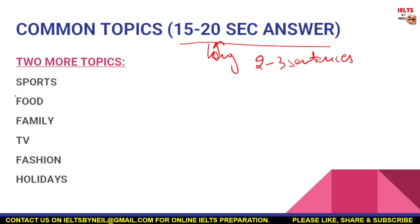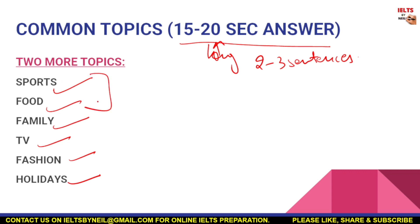Here are some common topics you might face in IELTS speaking part one: sports, food, family, TV, fashion, holidays. As you can see, all these are everyday life topics — nothing special or out of the box. The examiner will choose any two topics and ask three to four questions on each.